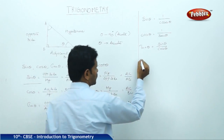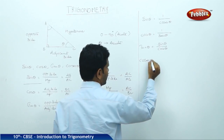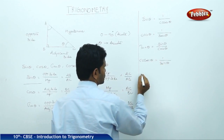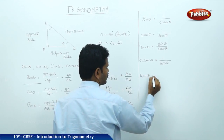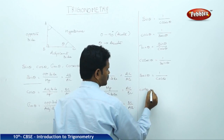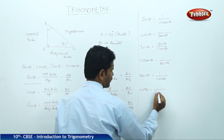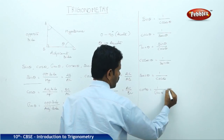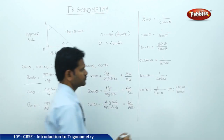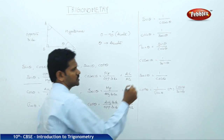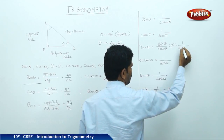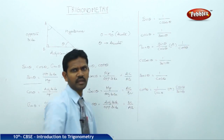Cosec theta can be written as 1 by sin theta. Secant theta can be written as 1 by cos theta. Cot theta can be written as 1 by tan theta, or equivalently, cos theta by sin theta. And tan theta can also be represented as sin theta by cos theta, or as 1 by cot theta.